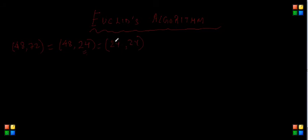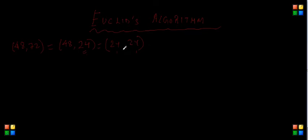I keep repeating this process until both values become the same. In this case, both elements are 24, so I stop the process right here. The GCD equals the common value, which is 24.